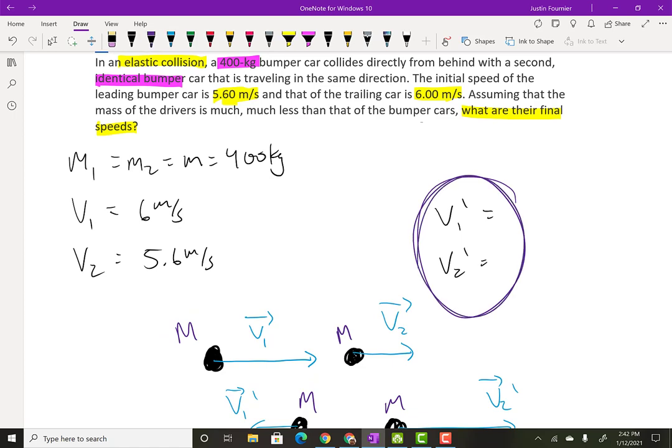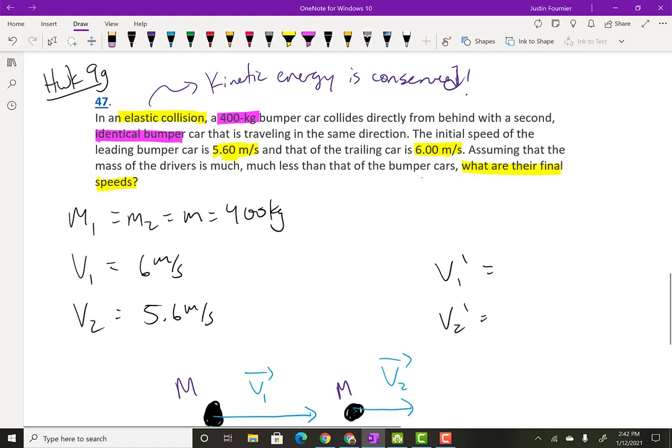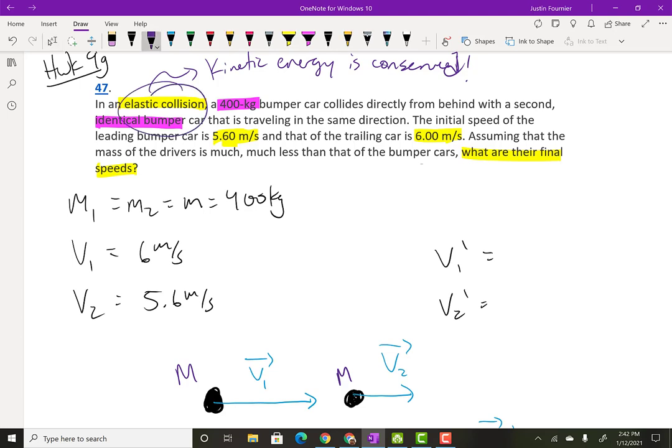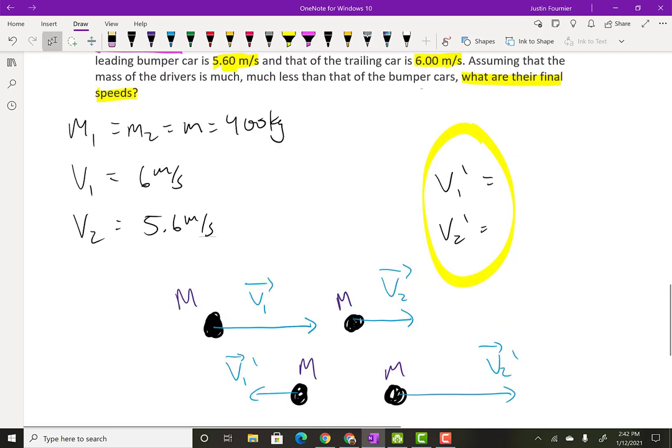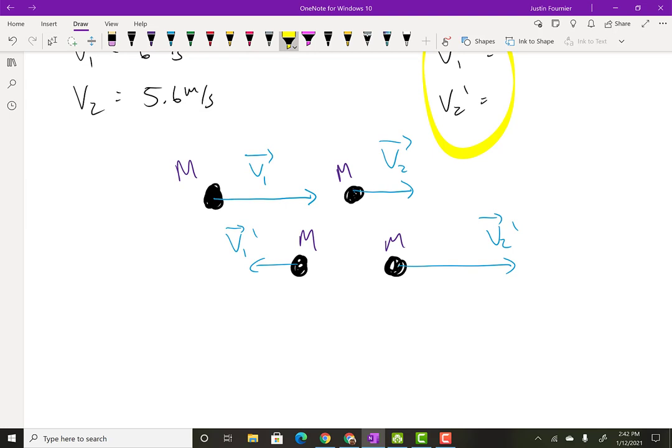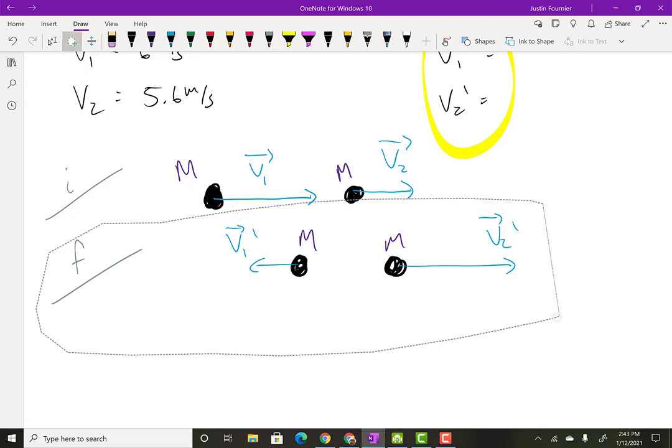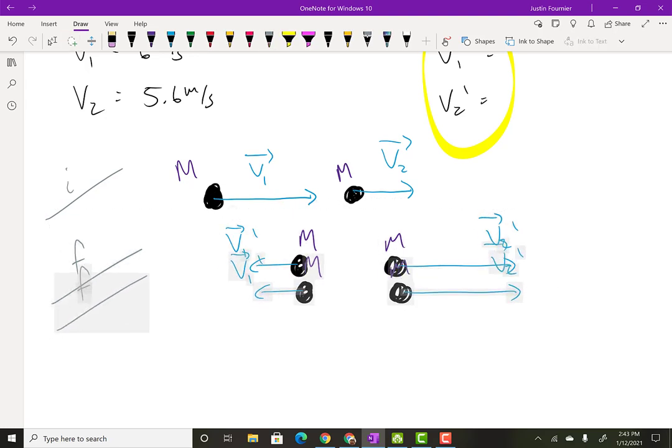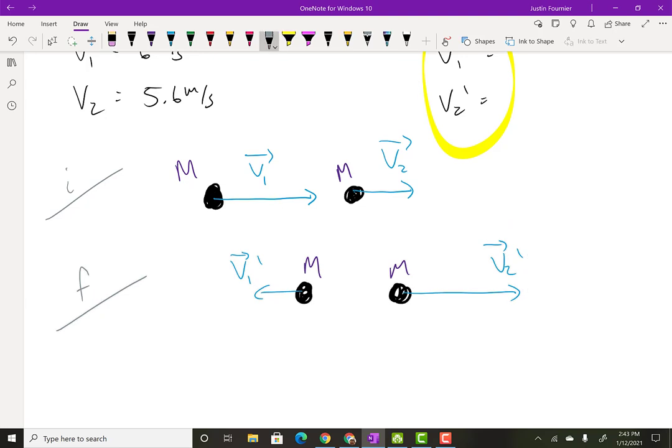It's worded kind of weirdly, but basically what that means is this trailing car, right, cause it's behind this car, is at a speed of six meters per second. So I have V1 is at six meters per second and then V2 is going to be at 5.6 meters per second because that's the leading car. And eventually this one's going to catch up and bump into that one. So next up then we're trying to find out what are the final speeds here?